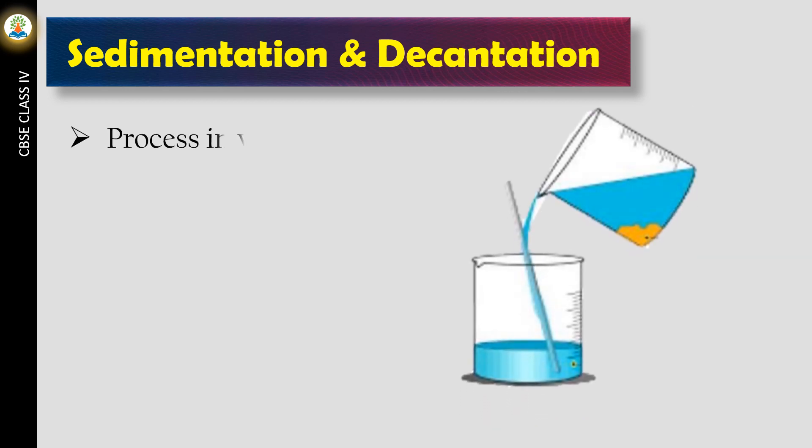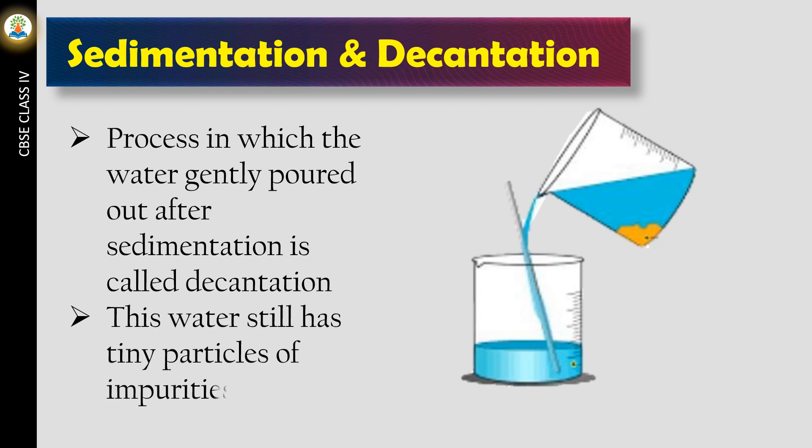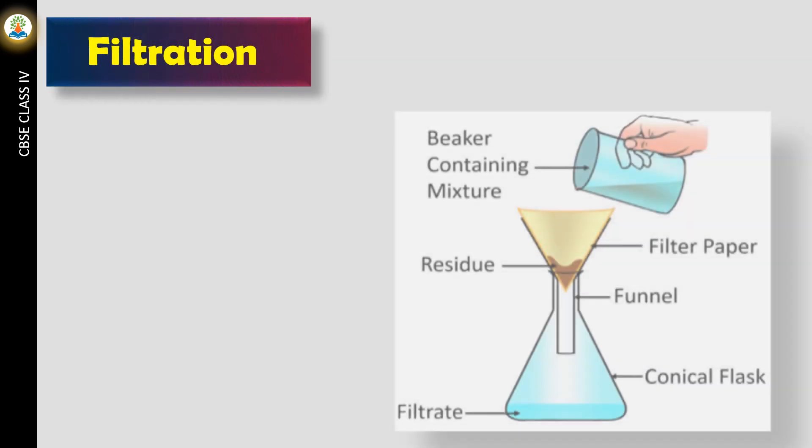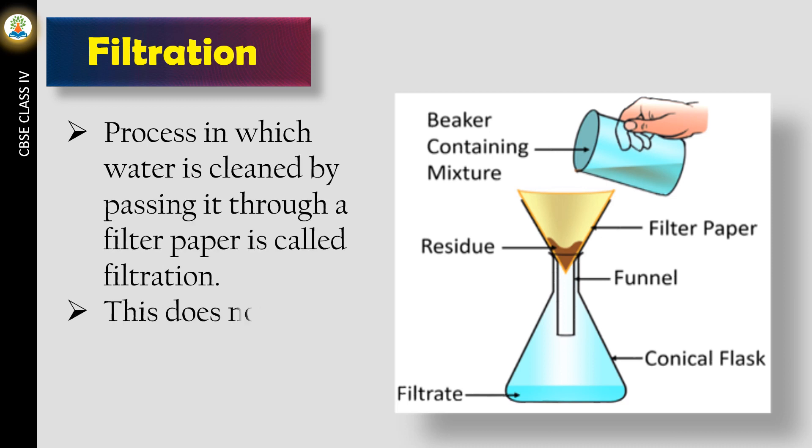The process in which the water is gently poured out after sedimentation is called decantation. This water still has tiny particles of impurities. The process in which water is cleaned by passing it through a filter paper is called filtration. This does not remove small sized germs from water.